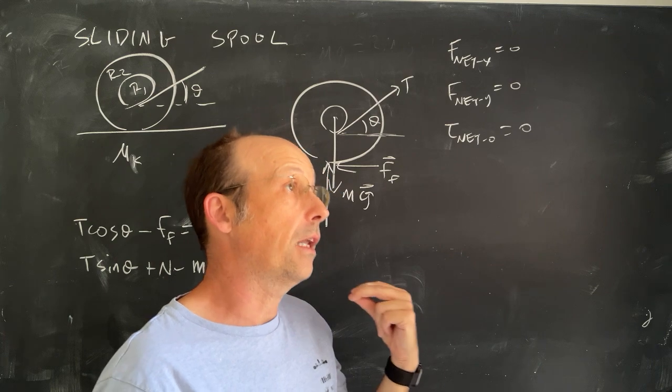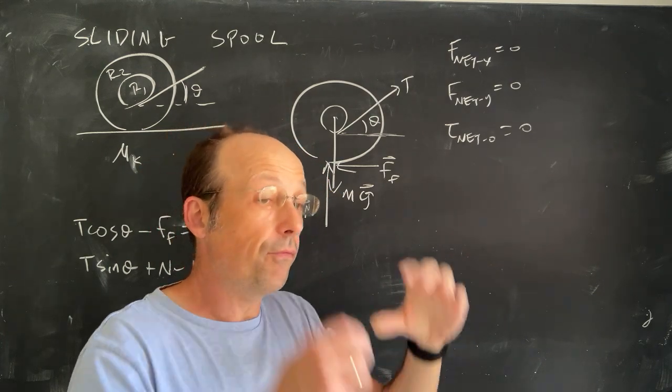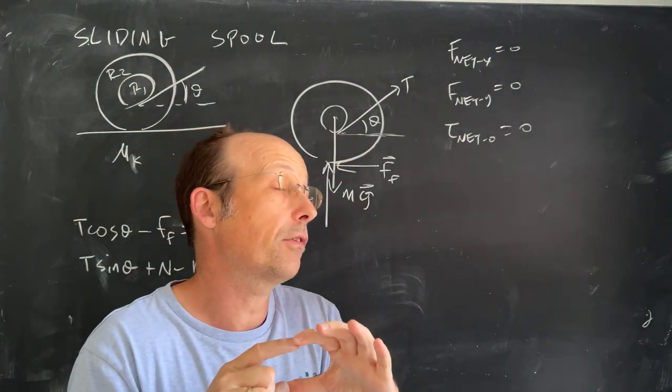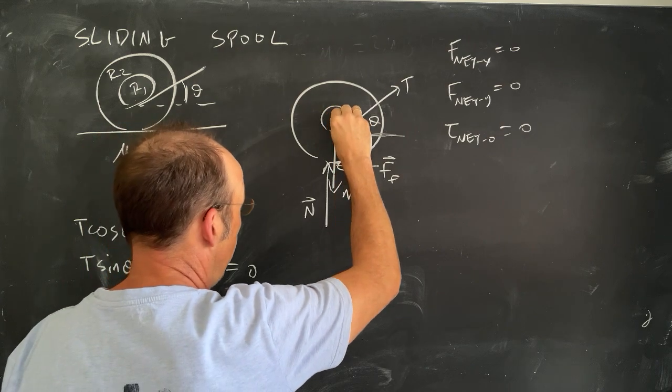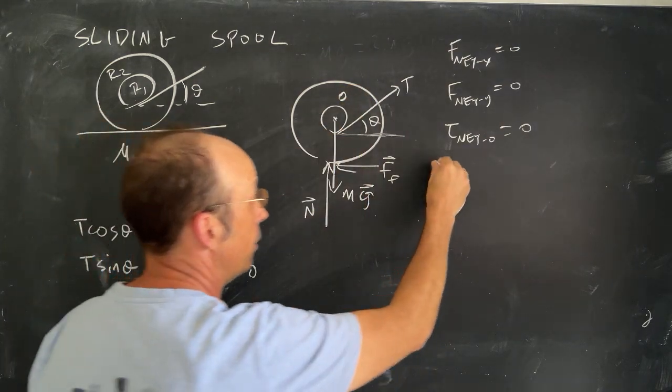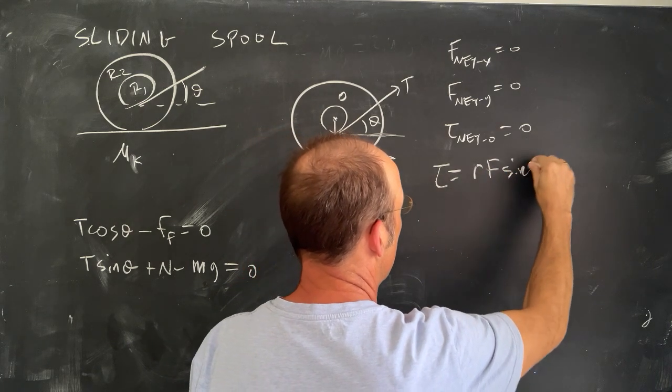Finally, I need to look at the sum of the torques about some point. And if the spool is not rotating about a point, it's not rotating about any point. So I can pick whatever point I want. Let's just pick the center right here. That will make the most sense. Point O is right there.